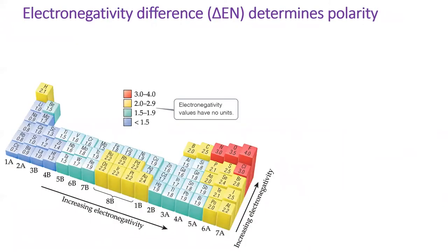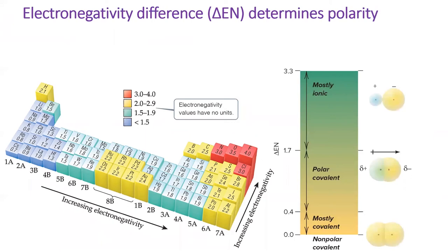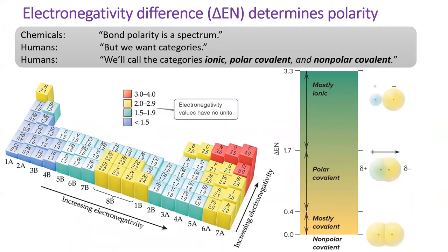The difference in electronegativity between two elements determines how polar the bond between those elements is. In reality, bond polarity is a spectrum, from fully equal sharing between atoms with the same electronegativity to complete electron transfer between elements with drastically different electronegativities.